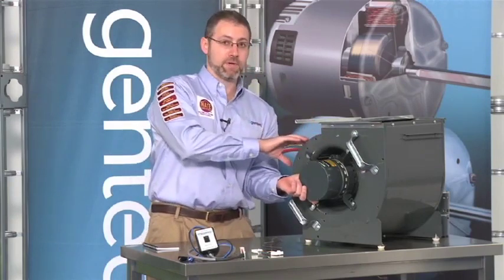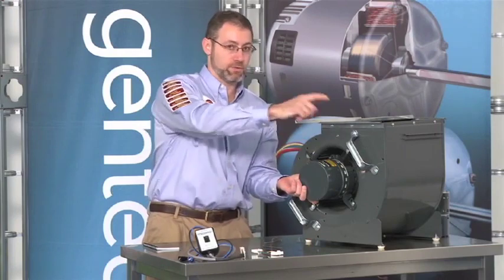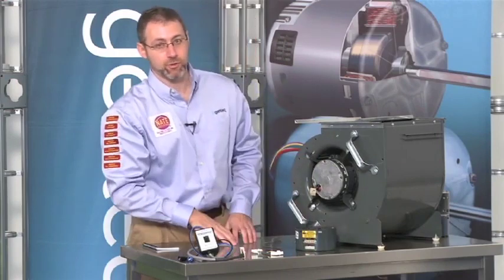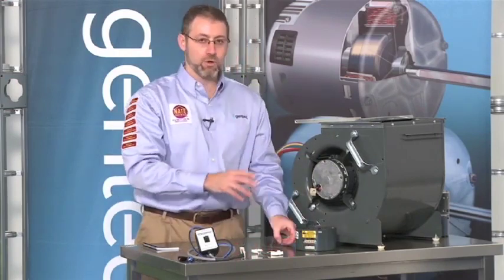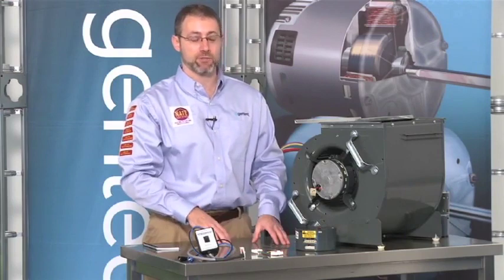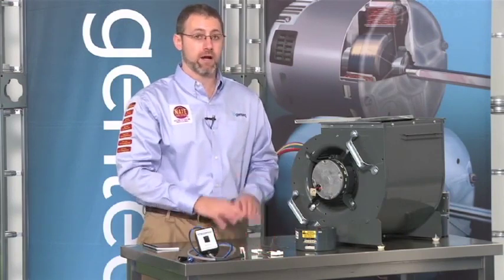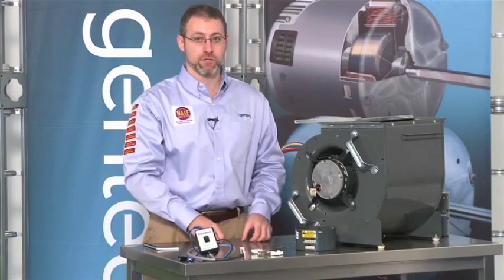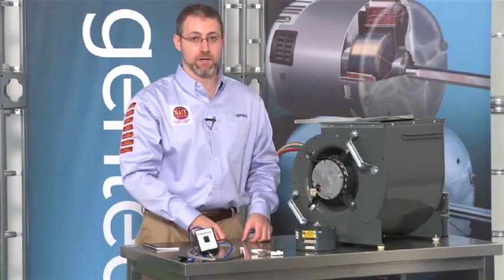For example, if this happened to go into a downflow appliance, then this would be 180 degrees, and that would be the proper orientation for that control. Now, all of these controls must come from the manufacturer, controls and motors. There are no generic variable speed motors. And of course, you should read all the literature that comes with those parts as well.